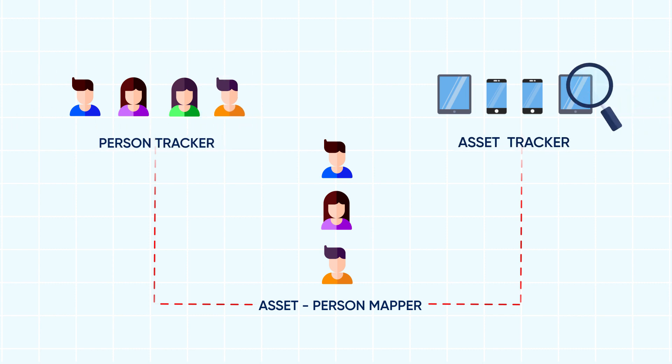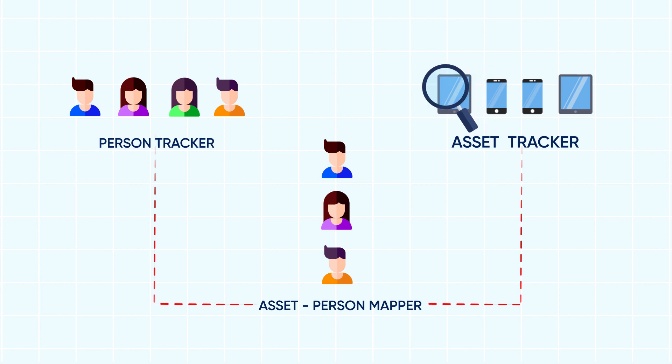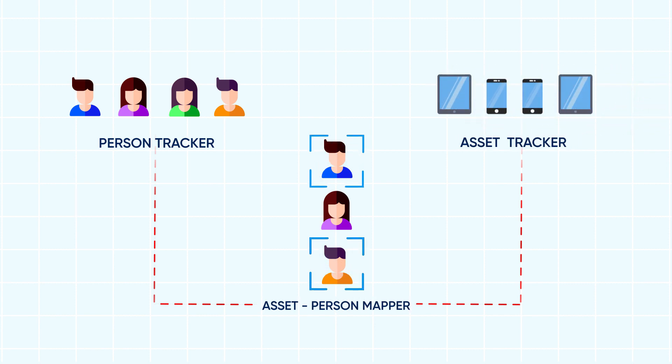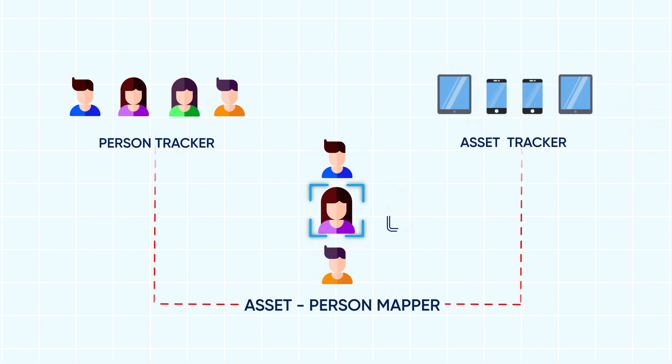The Asset Tracker module monitors availability of assets, while the Asset Person Mapper monitors asset logs and matches data of personnel to assign a device.